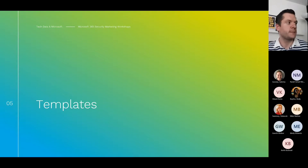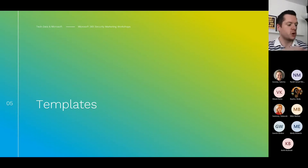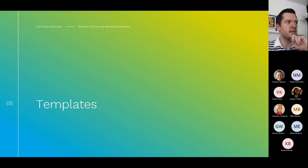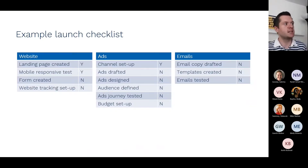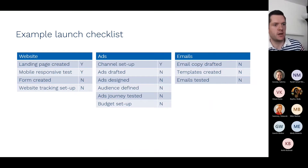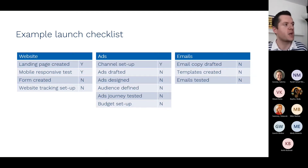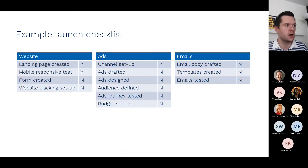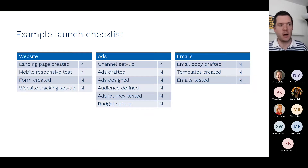Lastly, we've got some templates created as part of this process just to give you a flavour of how you might start to lay these things out. We've got a very rough and ready example launch checklist. If you're looking at going live — has the website page been created? Yes or no? Have we tested it against mobile? Is it responsive? Does the logo show? Is text cut off? Have we created the form? How are we tracking this? Do we have Microsoft Clarity or Hotjar set up? Are we set up to track conversions within Google Ads, within LinkedIn, within whatever platform we're using? Just all those very basic tracking things which are going to help us really attribute an ROI.